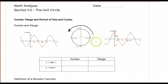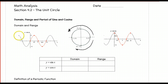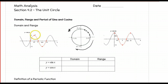As we travel around this circle, either counterclockwise or clockwise — if we go counterclockwise, we're going in a positive direction, so we'll generate the portion of the curve going to the right of the y-axis. If we go clockwise, we'll generate the portion to the left of the y-axis. To get y equals sine of x, at every point we hit along this curve, whatever the y-coordinates are at those points, we're going to graph those points on our curve versus the angle.